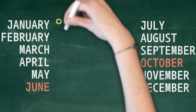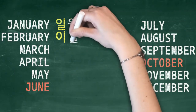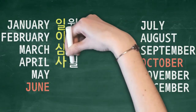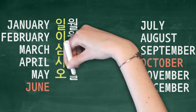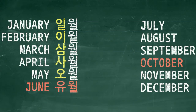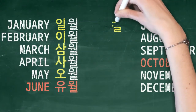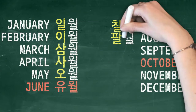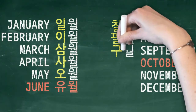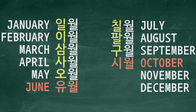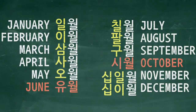So January is 일월 (i-wol), February is 이월, March is 삼월, April is 사월, May is 오월. June is not 육월 but rather 유월 (yu-wol). July is 칠월, August is 팔월, September is 구월. October is not 십월 but rather 시월 (si-wol). November and December are 십일월 (shibi-wol) and 십이월 (shibi-e-wol) respectively.